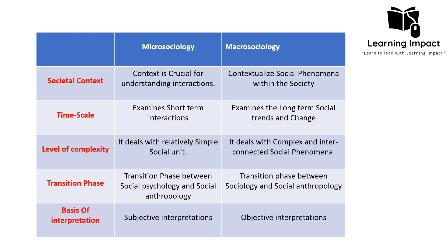Regarding transition phase, micro sociology acts as a transition phase between two fields of social science: social psychology and social anthropology. Social psychology studies how individual behavior is influenced by the presence or absence of another individual. Social anthropology studies society through a comparative lens. Micro sociology acts as a transition phase between them — from social psychology's focus on individual behavior to micro sociology's face-to-face interaction, and then to social anthropology's comparative analysis of society.